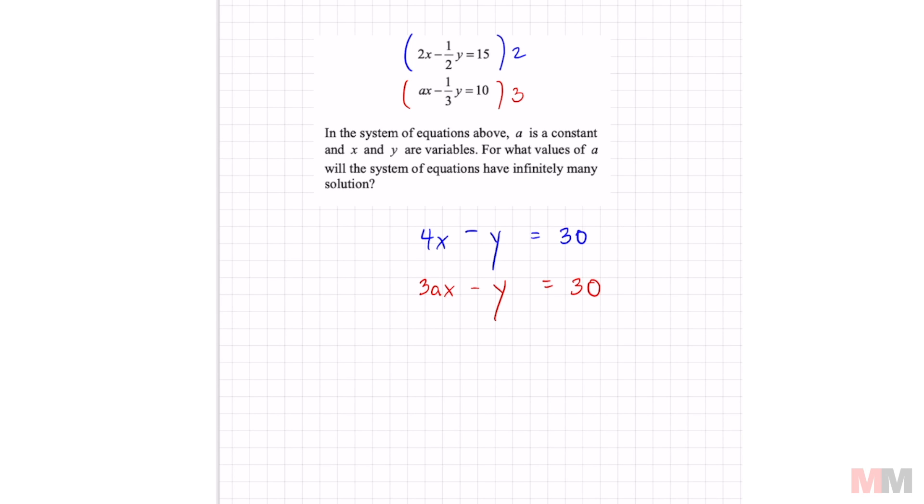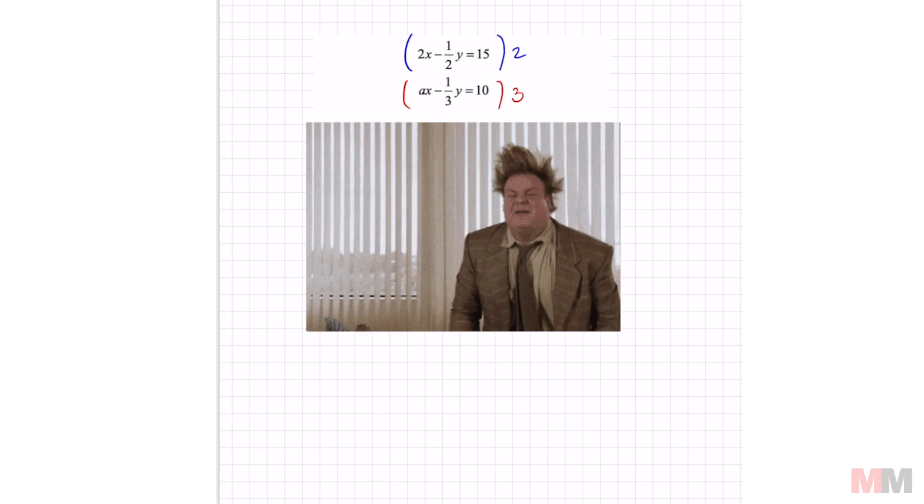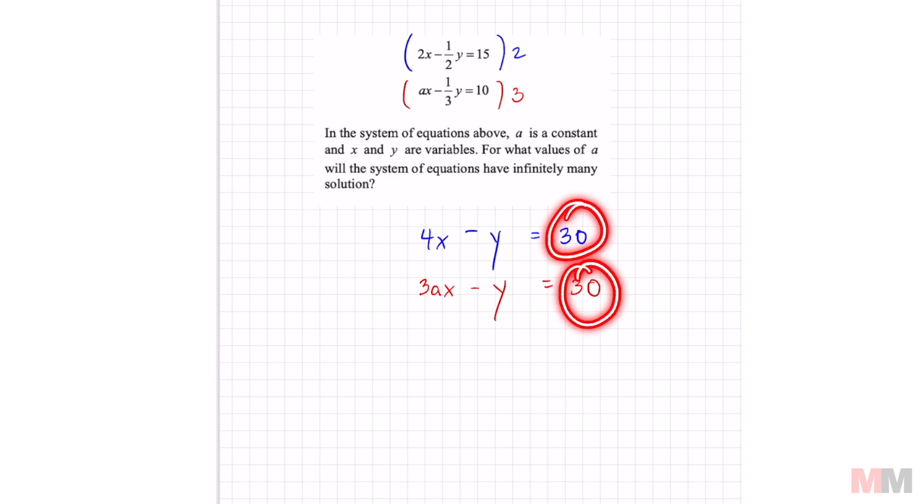And look at the equation right here. The SAT does this on purpose. They're not going to give you overly difficult problems because you're budgeted about a minute per problem. They're not going to make you go too crazy. The 30s are the same. The y's have the same coefficient of negative 1. So all we need are for these two to be the same. The coefficient in the red equation is really 3a, and I need to make it into a 4 somehow.